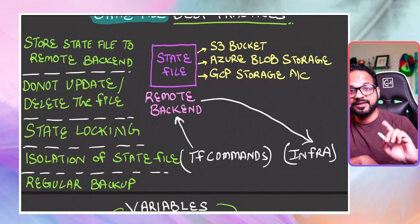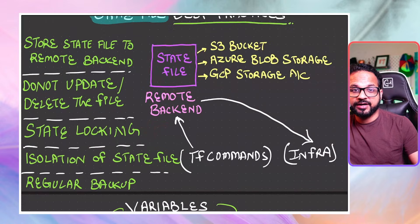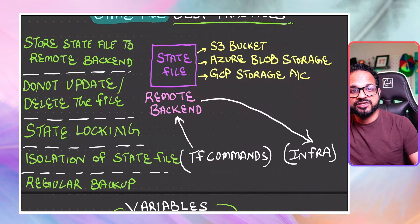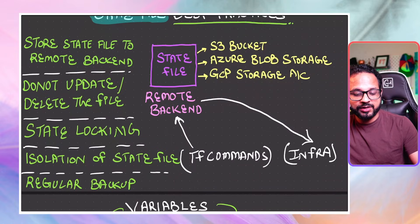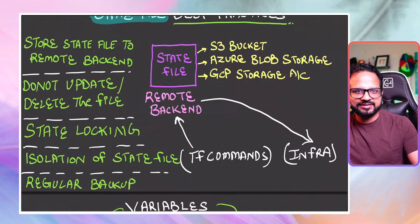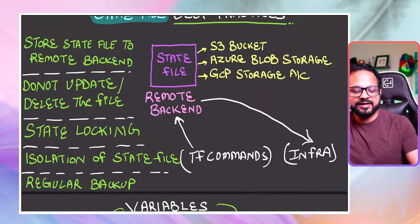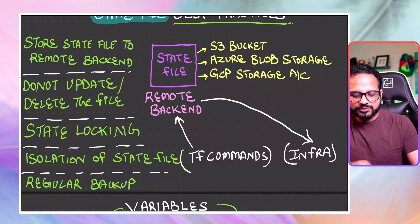State locking is another important feature. Because there is one central file located at the remote repository, multiple users can try to provision or make changes to the infrastructure at the same time, which will leave the infrastructure in an inconsistent state. To avoid that, you have to enable state locking. In AWS there is a separate mechanism using a DynamoDB table where you create a lock ID. In Azure and GCP, the storage account comes with the lock itself, so it is enabled by default.